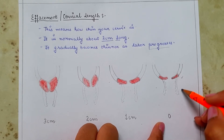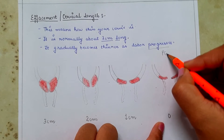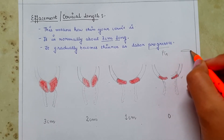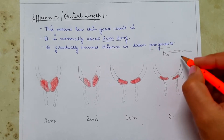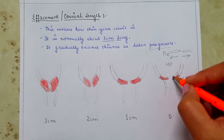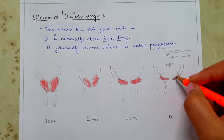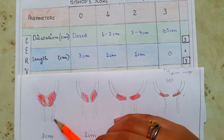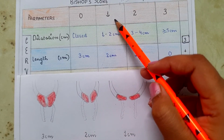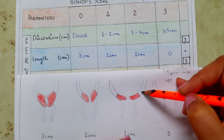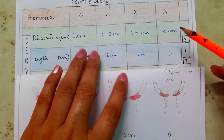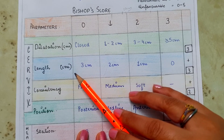In a primigravida, the cervix first effaces and then dilates. In a multipara, dilatation and effacement occur simultaneously. For scoring: cervical length of 3 cm gives score 0, 2 cm gives score 1, 1 cm gives score 2, and fully effaced gives score 3. The maximum score for this parameter is 3.